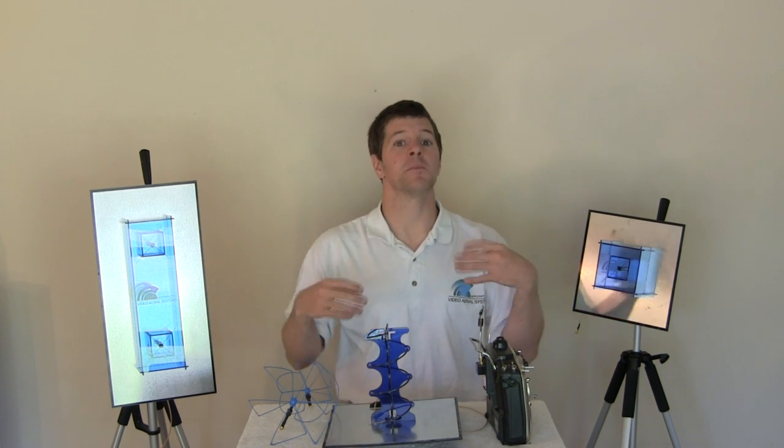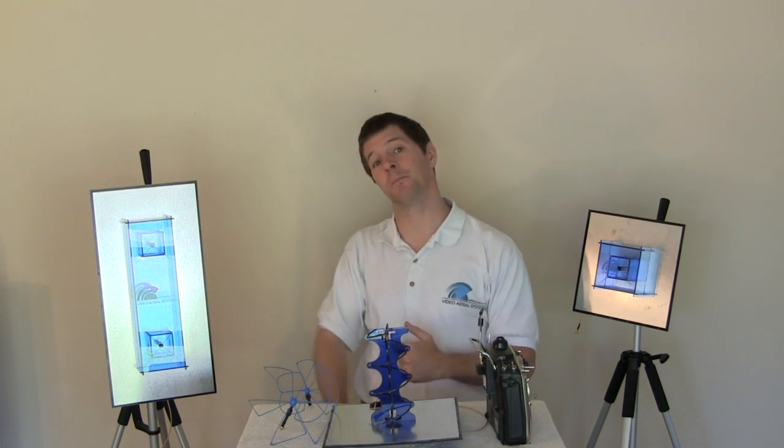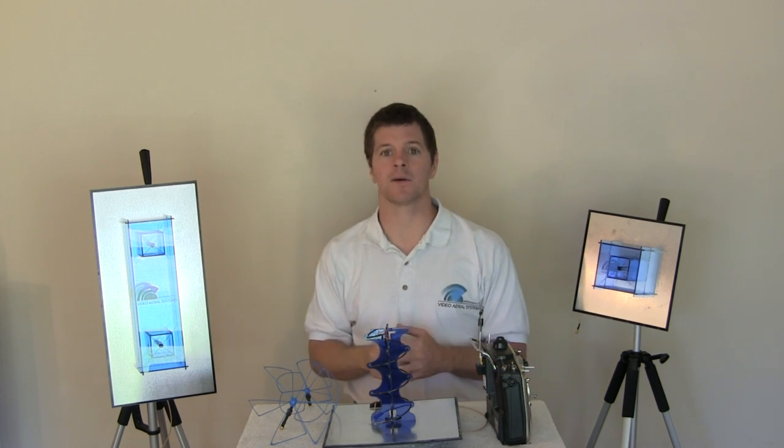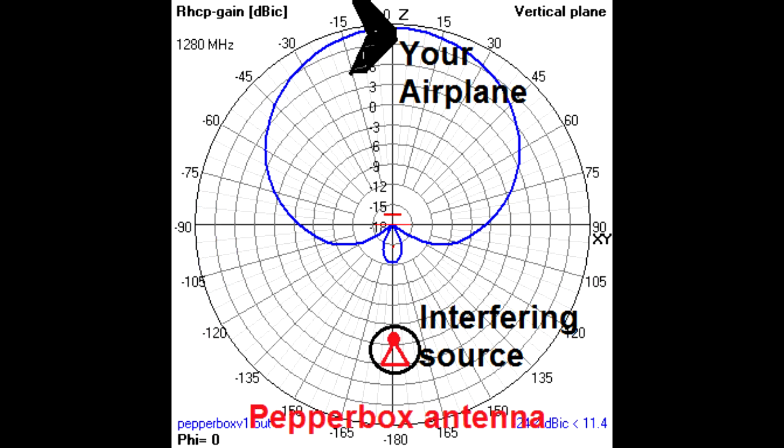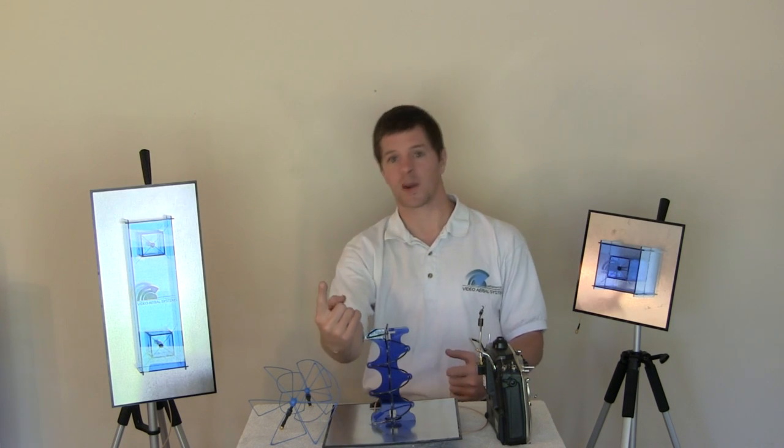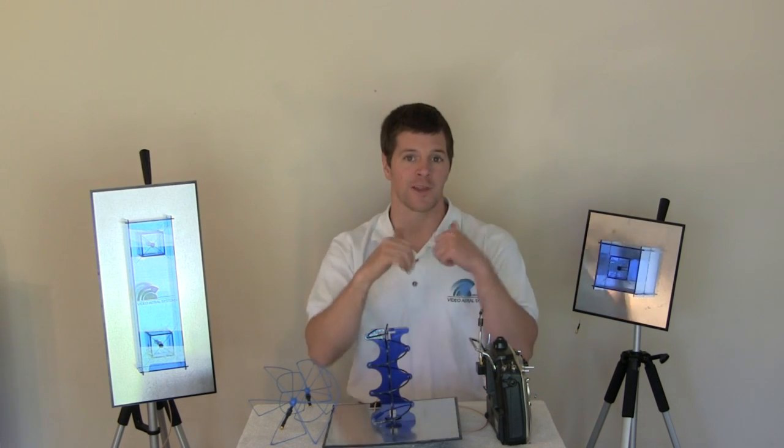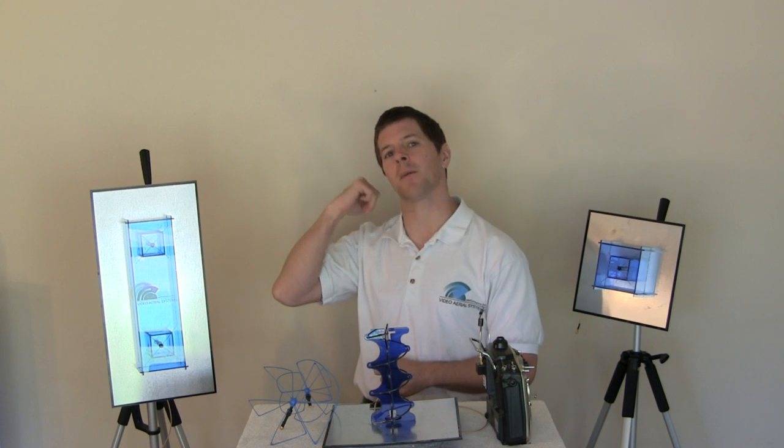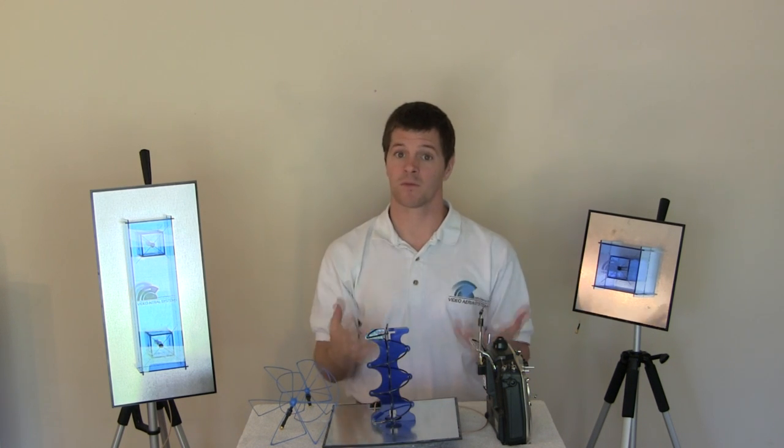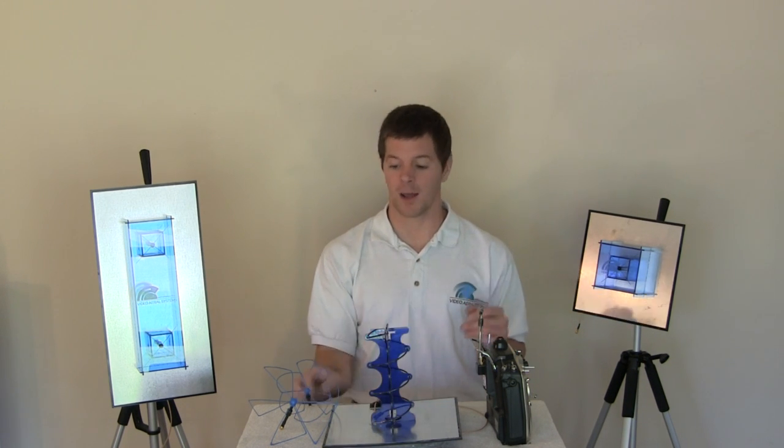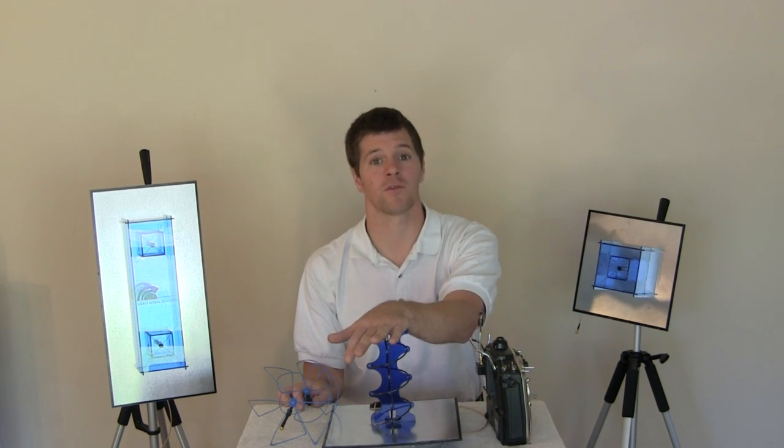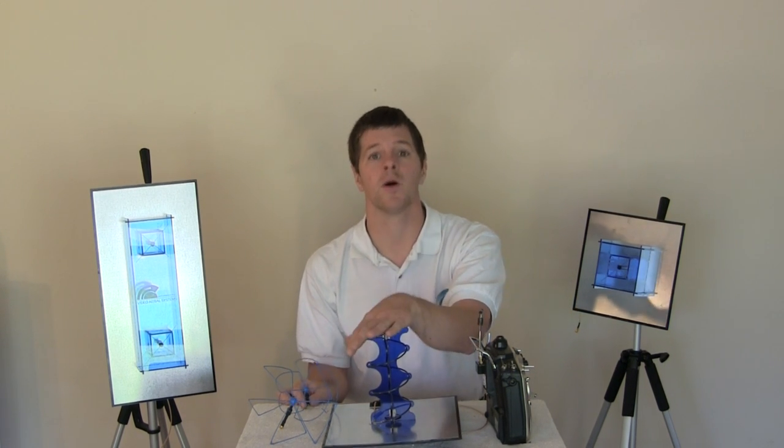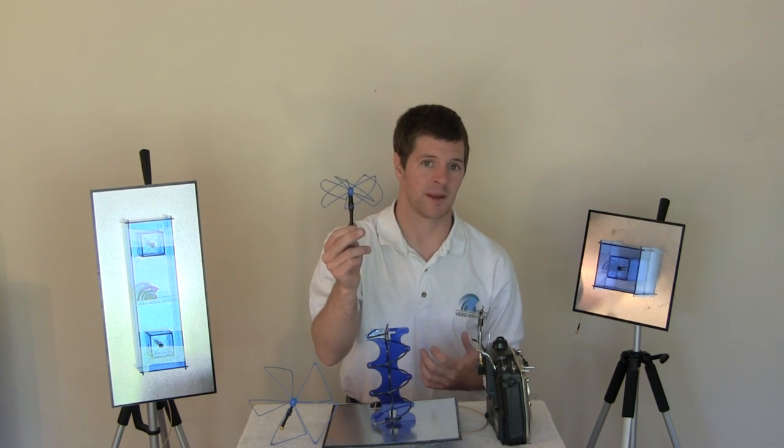Now, if the competing source is behind you, directly behind you, the pepper box does well because it doesn't hear very well directly behind itself. But the helical, because it has that rear lobe in the back, which allows you to fly behind it, will also pick up that competing signal fairly well. However, the signal will enter the back of the helical much weaker than it will an omni antenna.